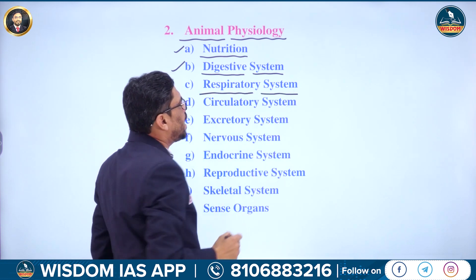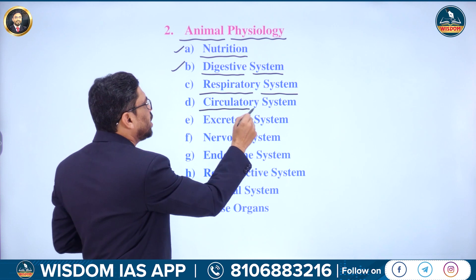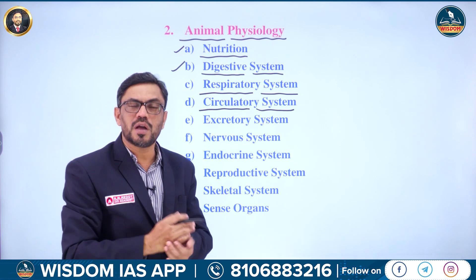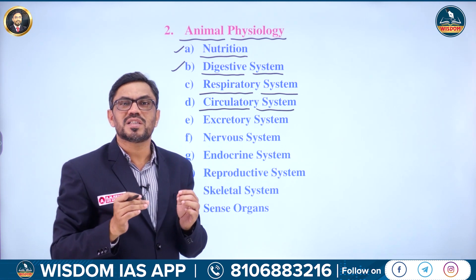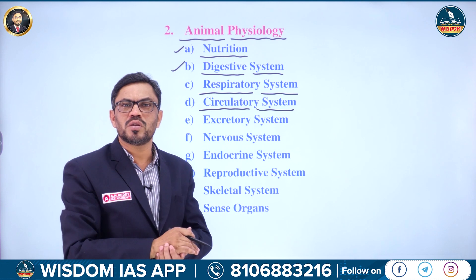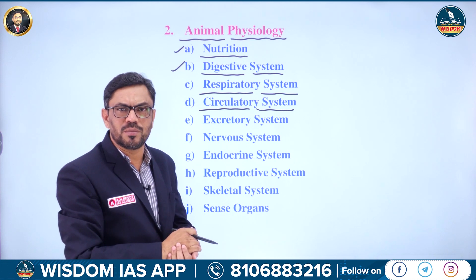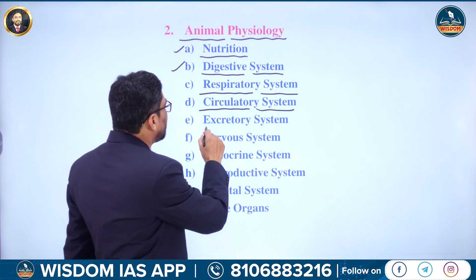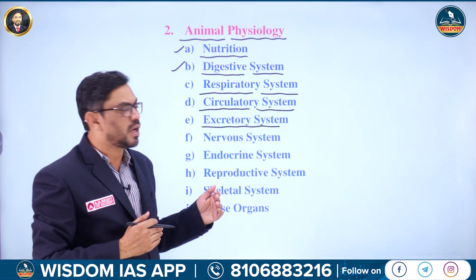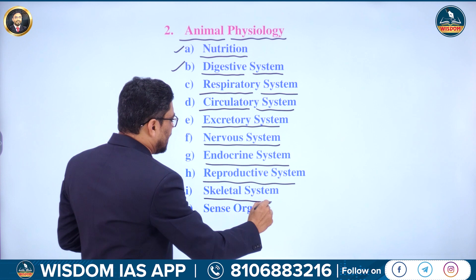Then the respiratory system — the anatomy and physiology of respiration, including the structure of the lungs. Then the circulatory system, also called the blood vascular system or transport system, responsible for transporting nutrients, hormones, and waste products formed during metabolism. Then the excretory system, covering the physiology of excretion and anatomy of the excretory system. Also covered are the nervous system, endocrine system, reproductive system, skeletal system, and sense organs.